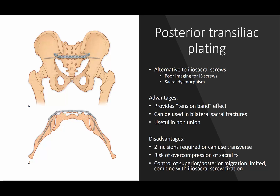What about posterior transiliac plating? This is an alternative to iliosacral screws — you may use it in cases with poor imaging or sacral dysmorphism. It's a utilitarian technique, not as anatomically demanding. Malleable plates can be fit to the situation and provide somewhat of a tension band effect. They can be used in bilateral sacral fractures and non-union cases, typically placed through two incisions. Be careful not to over-compress the sacral fracture. Control of superior and posterior migration is somewhat limited, but can be improved by adding iliosacral screws.